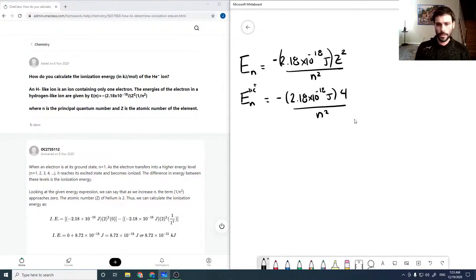So ionization, in a simplistic picture—if this is the nucleus and this is our electron orbiting—ionization is just the energy difference in taking the electron to infinity, so removing the electron from the atom.